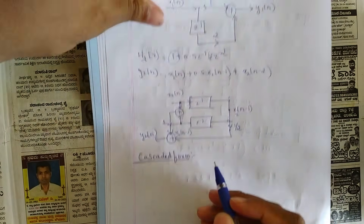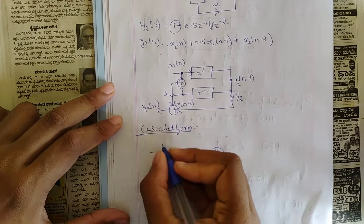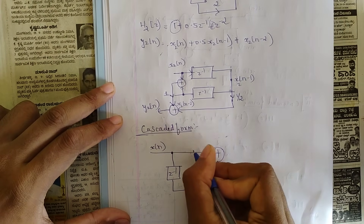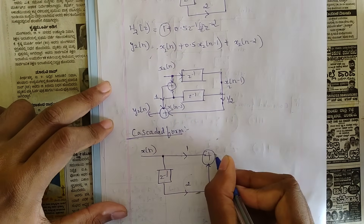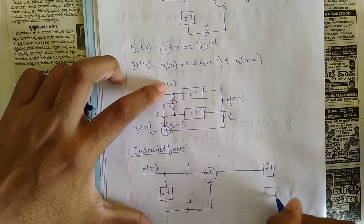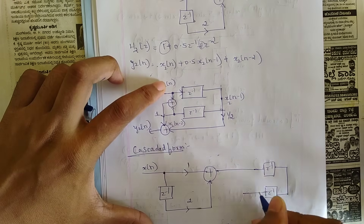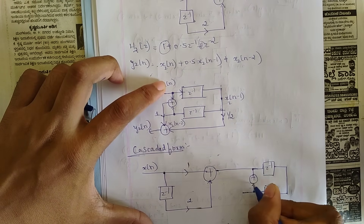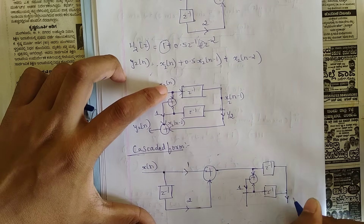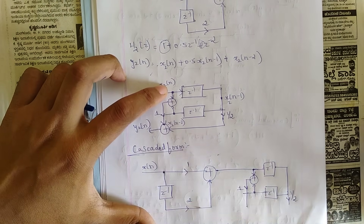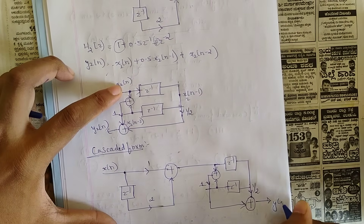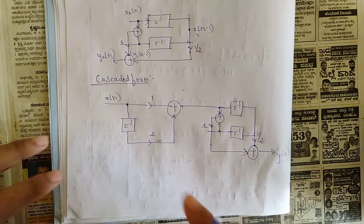To form the final cascaded structure, combine both stages: replace the input of H1 with x(n), connect its output y1(n) as the input x2(n) of H2. Copy the H2 structure after H1, with one delay, coefficients 1, 1, and 1/2 through the summer, and the final output labeled y(n).